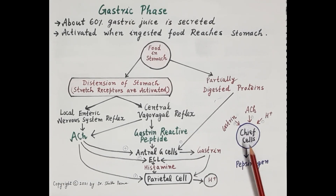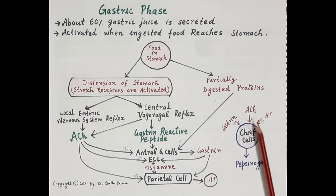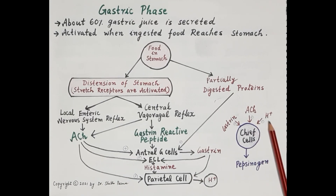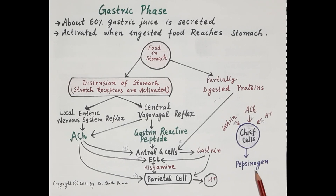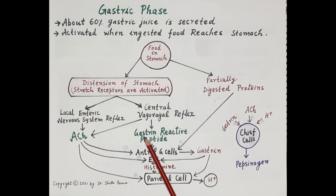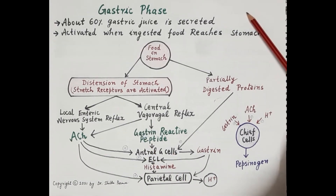The chief cells are present in the gastric glands, and when stimulated they produce pepsinogen. Gastrin, acetylcholine, and stomach acidity all stimulate the chief cells to produce pepsinogen, which is activated to pepsin — the proteolytic enzyme that digests proteins. Gastric acid and pepsinogen are the major components of gastric juice, and this is how acetylcholine, gastrin, and histamine regulate the gastric phase.